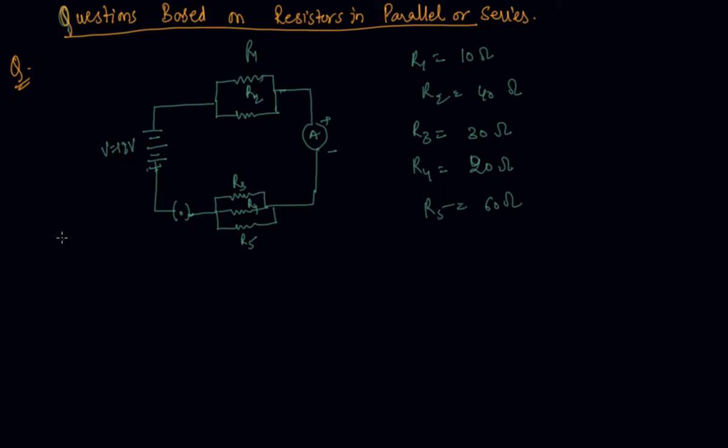So, we have to find out the total resistance, question A part is total resistance of circuit. Second B part is the total current flowing, the total current flowing in circuit.